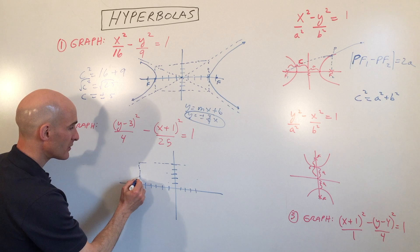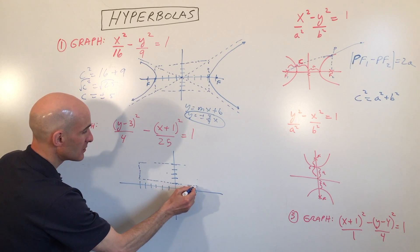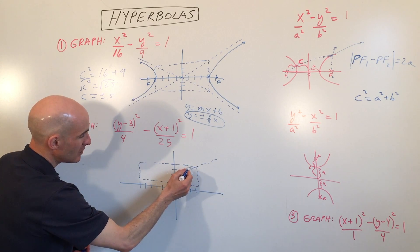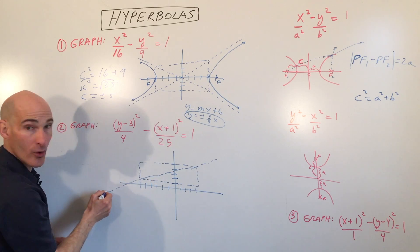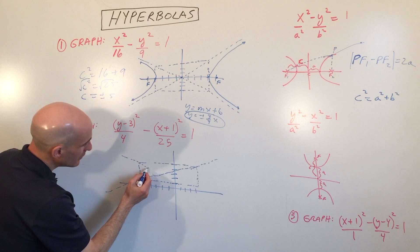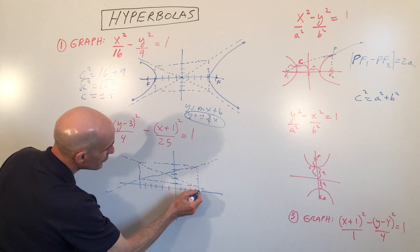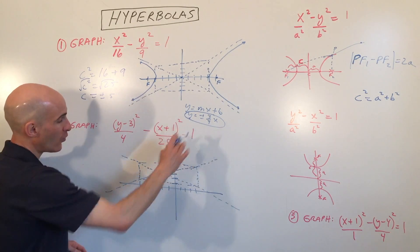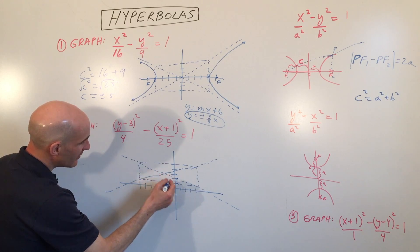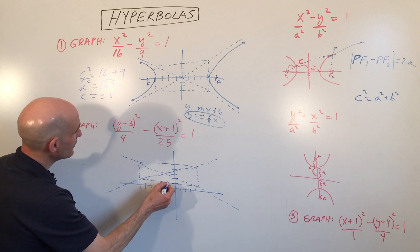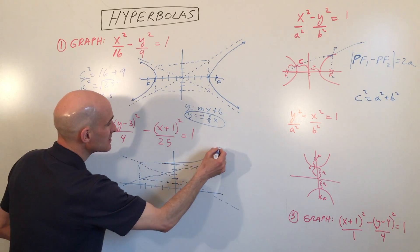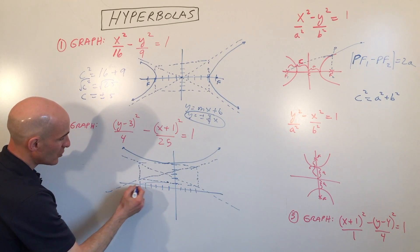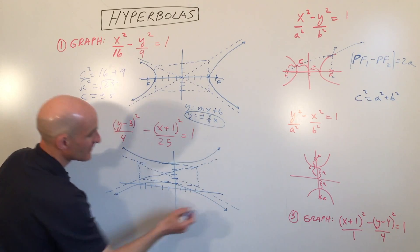We're going to draw a rectangle through these points, then draw our asymptotes through the corners of the rectangle, through the center, and through the other corners. Since y-squared is the positive term, the graph opens in the y direction. The vertices are above and below the center, and the graph approaches the asymptotes going outward — opening upward and downward from each vertex.